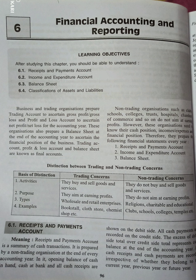Here is the distinction between trading and non-trading concerns. The basis of distinction is activities — trading concerns buy and sell goods and services, but non-trading organizations do not. Regarding purpose, trading concerns aim at earning profits, while non-trading concerns do not. The types are: trading concerns include wholesale and retail enterprises, and non-trading concerns are religious, charitable and educational.